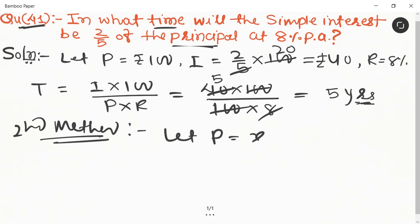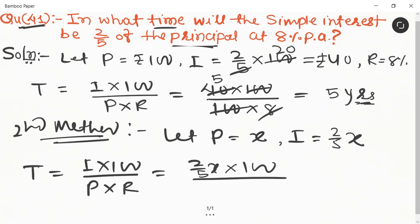Second method: Let the principal be rupees x, so its interest is equal to 2/5x. Time is equal to I × 100 upon P × R. So it is equal to 2/5x × 100 upon x × 8. x cancels, 5 into 20 is 4, so it equals 5 years.